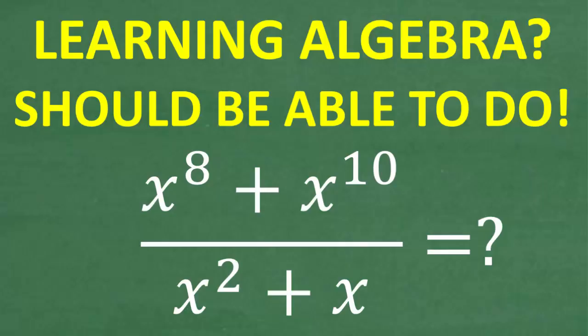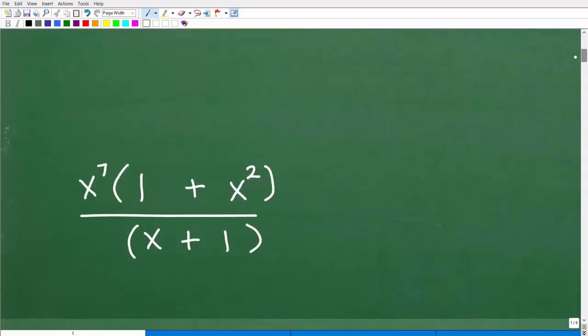Okay, so let's go ahead and take a look at the answer to this. Again, it might be a little bit difficult to type into the comment section, but nevertheless, let's go ahead and simplify this expression. And when we do this correctly, this is the answer you will get. So you have x to the seventh times one plus x squared over x plus one.